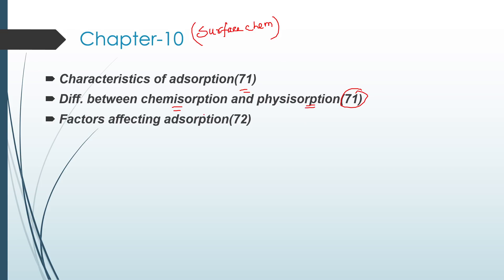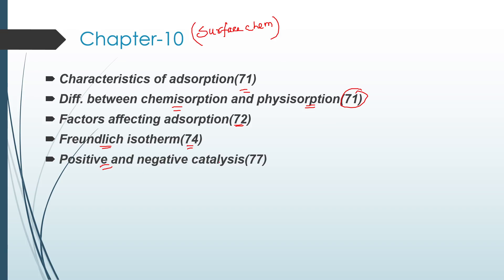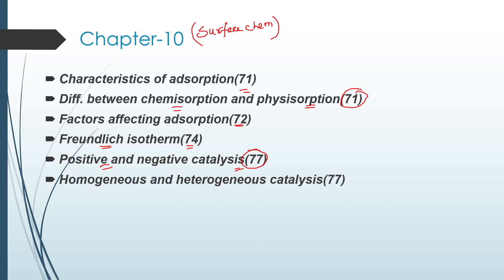Third question: factors affecting adsorption, page 72 — 2 marks for listing, 3 marks for explanation. Next is Freundlich isotherm, page 74. Then positive and negative catalysis, page 77 — important. Next, the difference between homogeneous and heterogeneous catalysis, page 77 — very important.